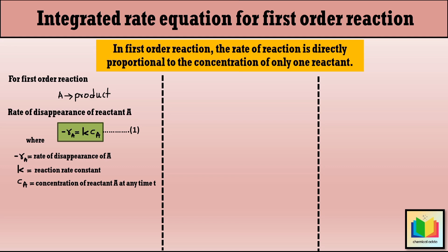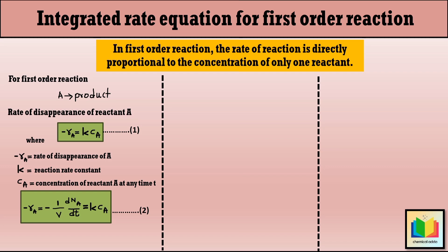We can write: minus R_A equals minus (1/V)·(dN_A/dT) equals K·C_A. To derive the integrated rate equation for a first-order reaction, we first need to express this equation in terms of conversion, and then we can integrate the equation to get the final form. So step 1 is to convert N_A, C_A, and V in terms of conversion.